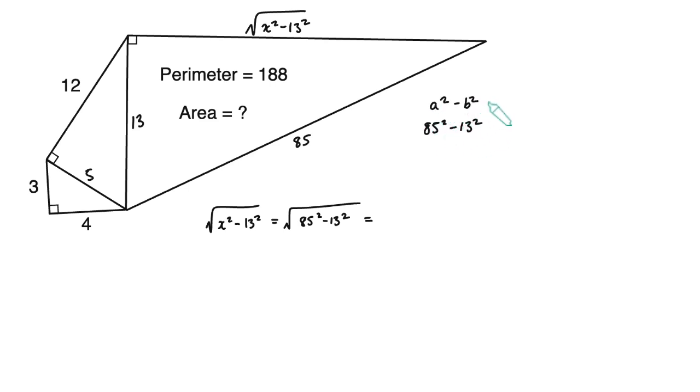Now 85 squared minus 13 squared is a difference of two squares expression. The difference of two squares tells us that a squared minus b squared equals a plus b times a minus b. So 85 squared minus 13 squared is 85 plus 13 times 85 minus 13.